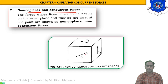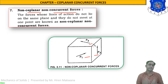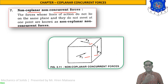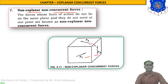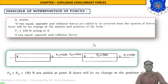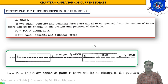Number seven is non-co-planar non-concurrent forces. In this cube there are three forces P1, P2, and P3 that are not intersecting at any corner and are resting in all different planes. The forces whose lines of action do not lie on the same plane and do not meet at one point are known as non-co-planar non-concurrent forces.